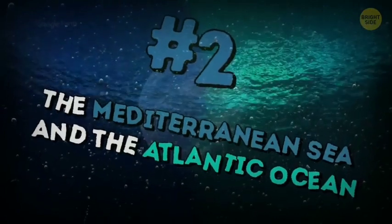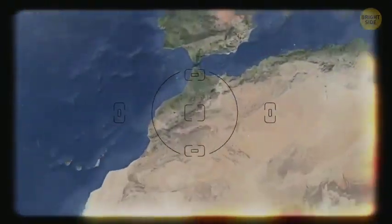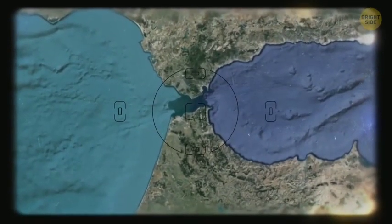The Mediterranean Sea and the Atlantic Ocean. They meet at the Strait of Gibraltar and have a different density and salinity, so their water does not mix too.